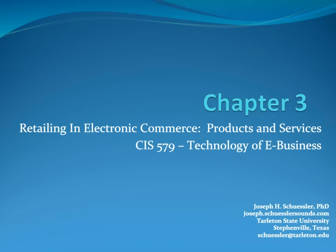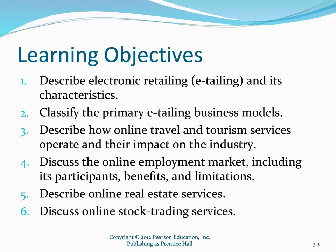Welcome to CIS 579, Technology of E-Business. This is Chapter 3: Retailing in Electronic Commerce — Products and Services. The learning objectives for this chapter include describing electronic retailing, sometimes referred to as e-tailing, and some of its characteristics. We'll also talk about the primary e-tailing business models and try to classify them to make it easier to distinguish one model from the next.